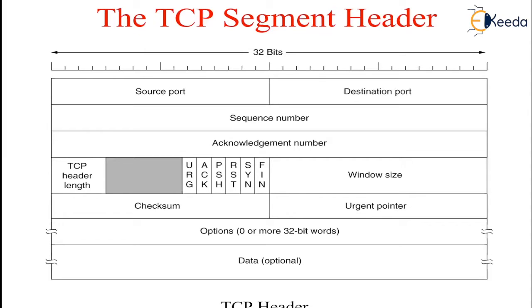Flow control in TCP is handled using a variable-sized sliding window. The window size field tells how many bytes may be sent starting at the byte acknowledged.